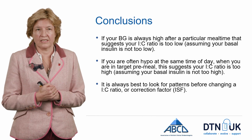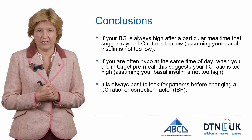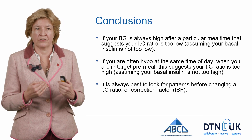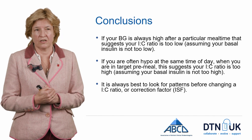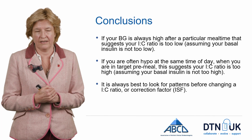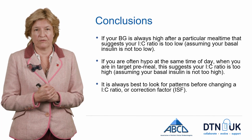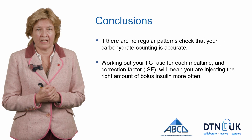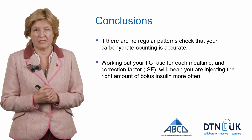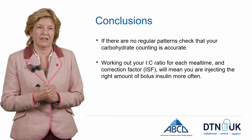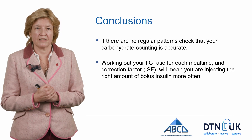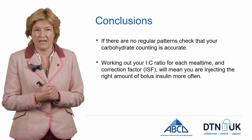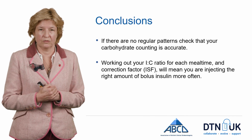If your glucose is always high after a meal then that suggests your insulin-to-carbohydrate ratio is too low, assuming your basal insulin isn't too low. If you're often hyper at the same time of day when you're in target pre-meal, this suggests your insulin-to-carb ratio is too high, assuming your basal insulin is not too high. It's always best to look for patterns before you change a ratio or correction factor. For some people, if there are no regular patterns, it's best to go back to carbohydrate counting and check that it's accurate. By spending time working out the correct insulin-to-carbohydrate ratio and correction factors throughout the day, you'll find that you are injecting the right amount of bolus insulin on a more regular basis. Thank you.